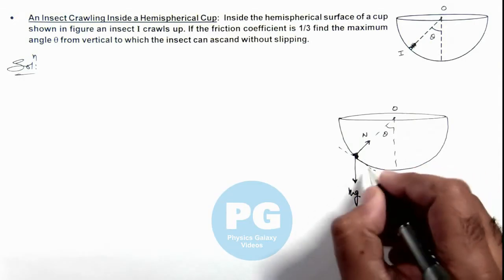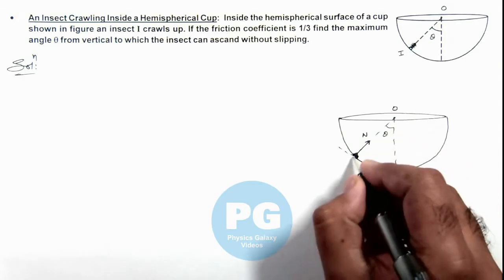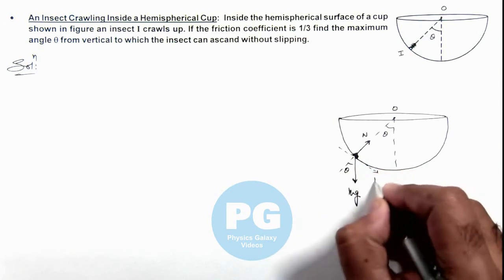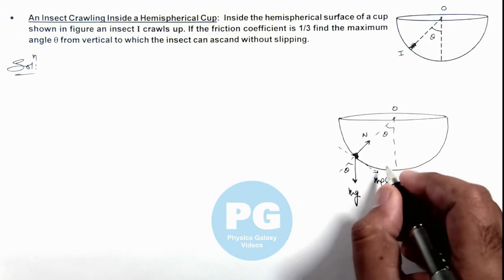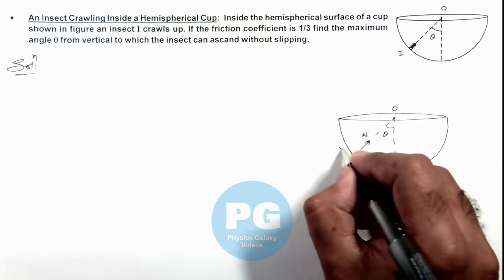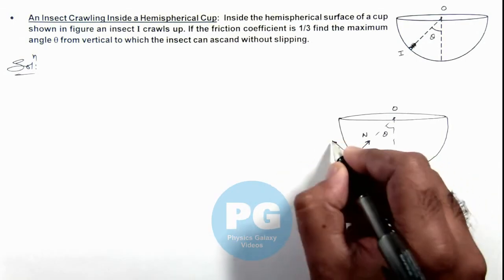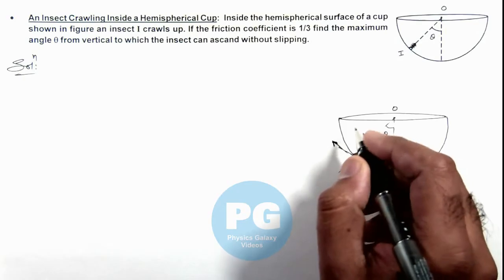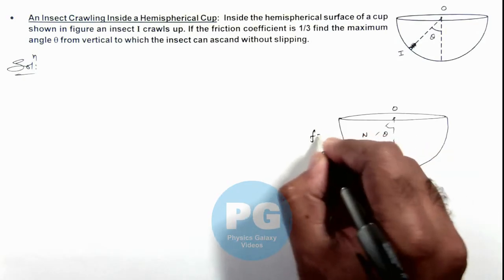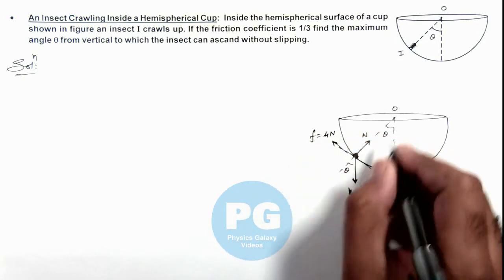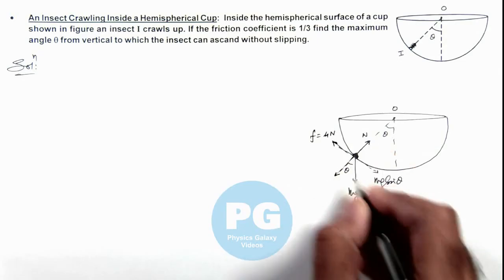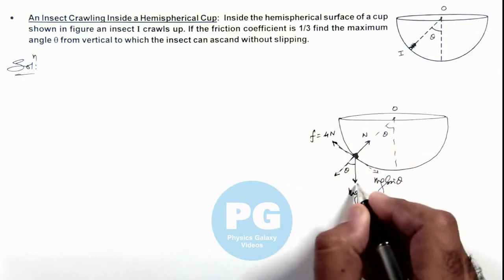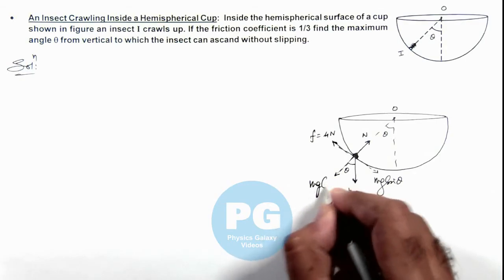Here you can see this angle is theta. mg sin theta will be the force responsible for its sliding, so friction will act tangentially upward. Under the limiting situation, we can write the value of friction as μN. The value of N will be balanced by the normal component of its weight, which is mg cos theta.